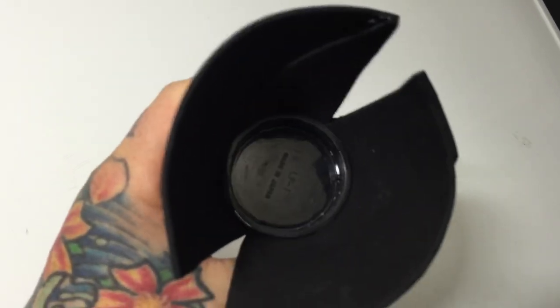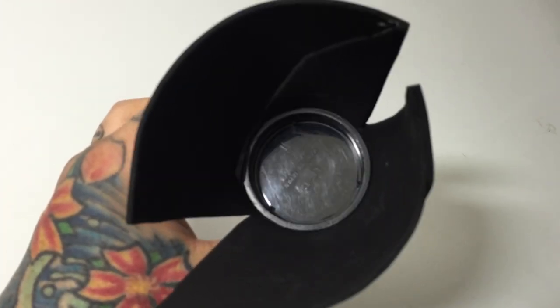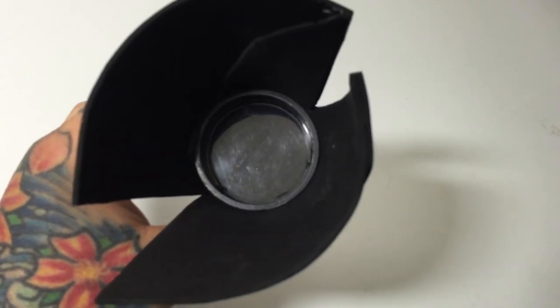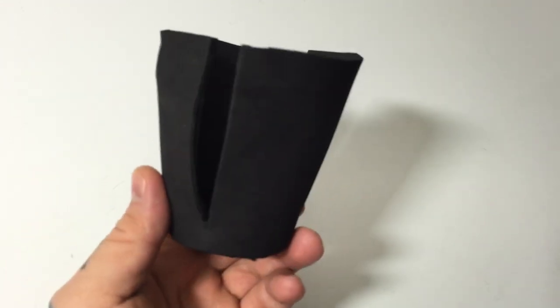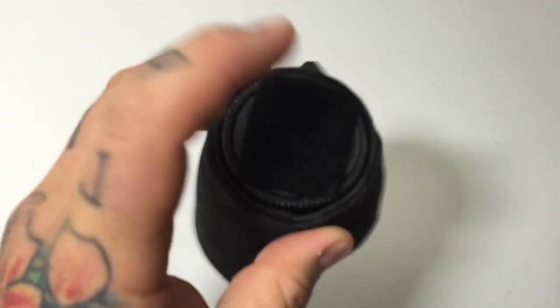First thing you do though is there are three little bayonet lips on the inside here and I've ground them down completely smooth so the inside of the lens cap is totally smooth. That way you just drop it in and this will fit basically any lens.